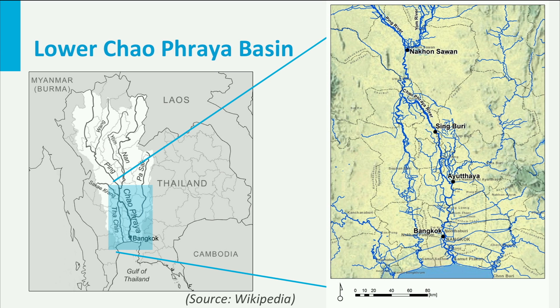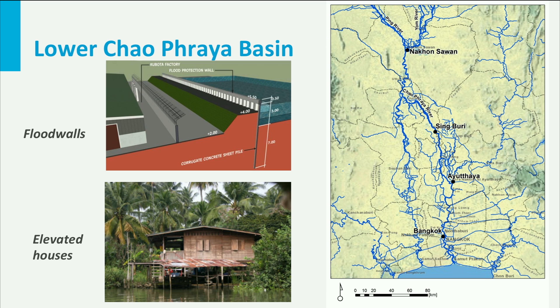For example, in the Chao Phraya river basin in Thailand, seasonal flooding is important for agriculture. Large canal and irrigation systems are present and river dikes allow seasonal overflow. In some places, elevated housing is present to accommodate flooding. However, larger dikes and flood walls are applied to protect cities such as Bangkok and industrial areas. Thus, the optimal mix of measures depends on the local situation.